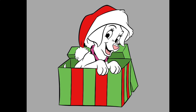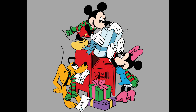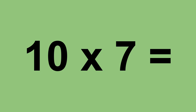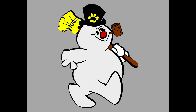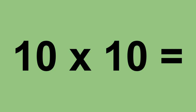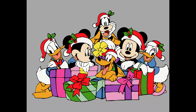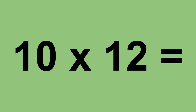Ten times five equals fifty. Ten times six equals sixty. Ten times seven equals seventy. Ten times eight equals eighty. Ten times nine equals ninety. Ten times ten equals one hundred. Ten times eleven equals one hundred and ten.